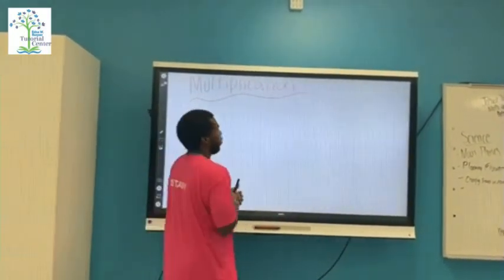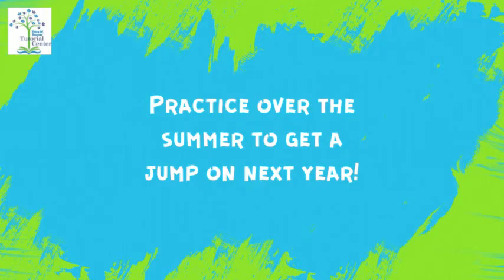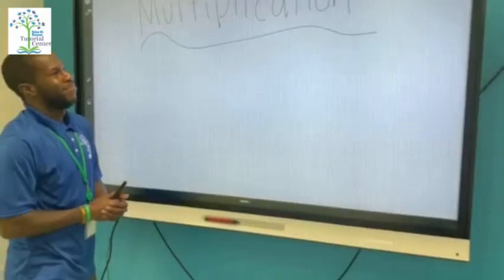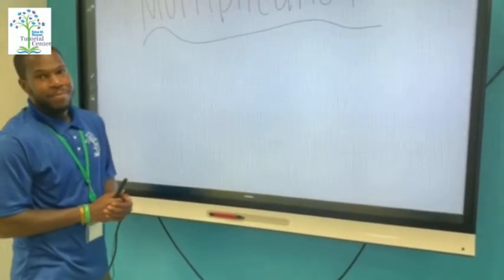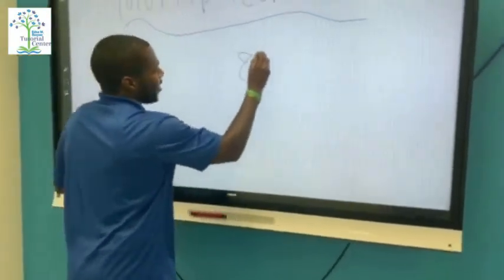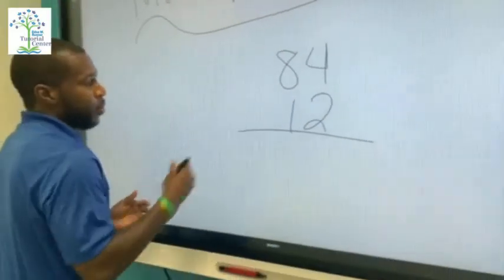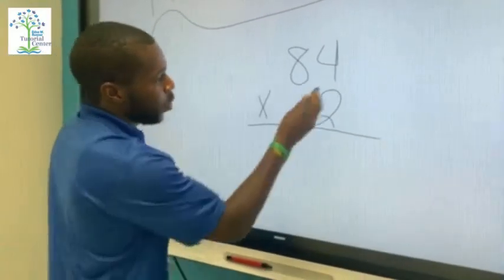So we're gonna do a few problems. We're gonna do 84 times 12. We're gonna work from right to left, so I'm gonna start off with this two.